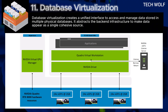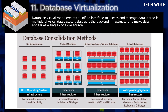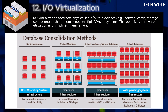The eleventh type of virtualization is database virtualization. Database virtualization creates a unified interface to access and manage data stored in multiple physical databases, abstracting the backend infrastructure to make data appear as a single cohesive source. For example, Oracle database virtualization integrates data across multiple database servers into one logical database, allowing a company with distributed databases to run a single query to retrieve and analyze data seamlessly.